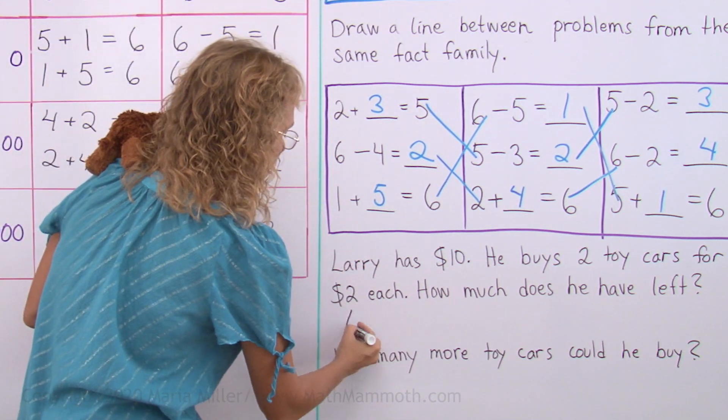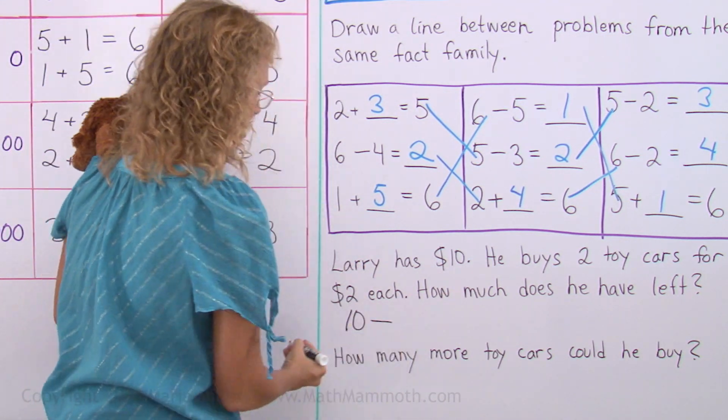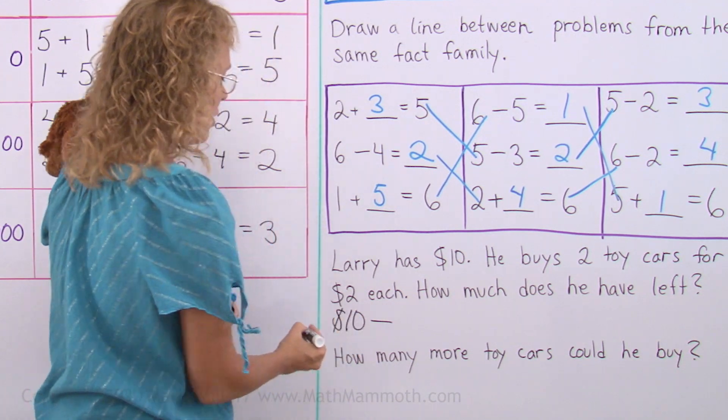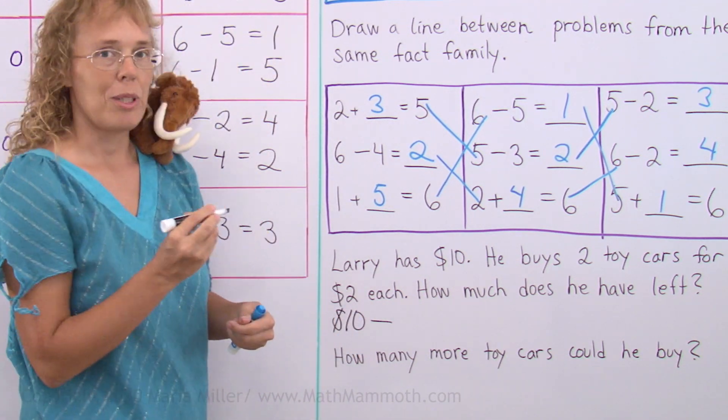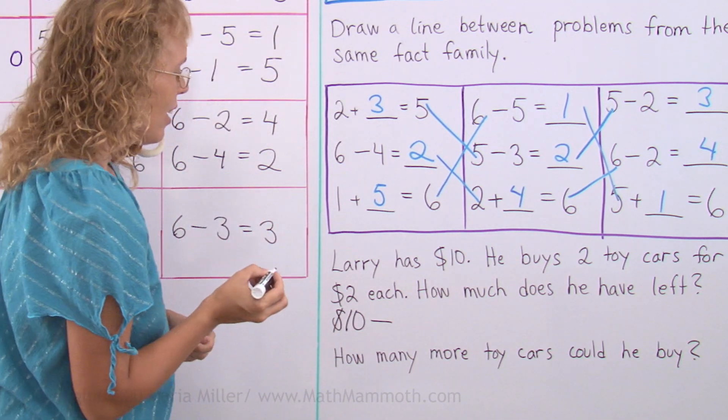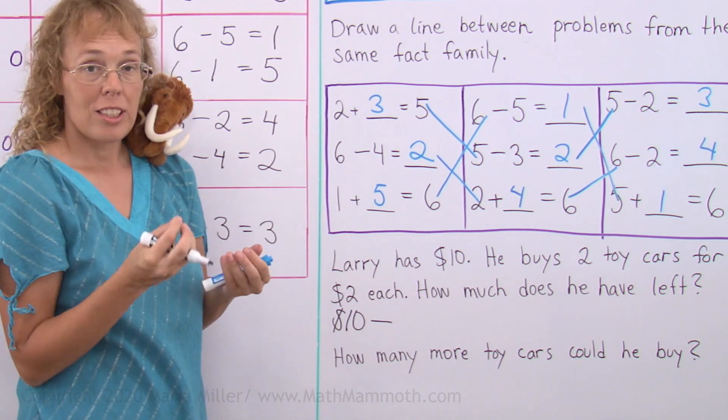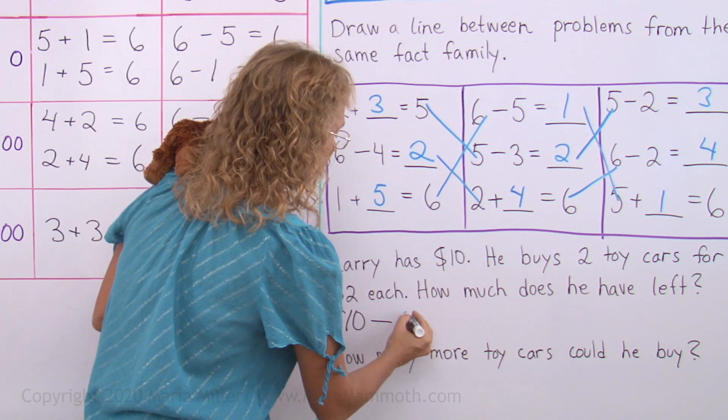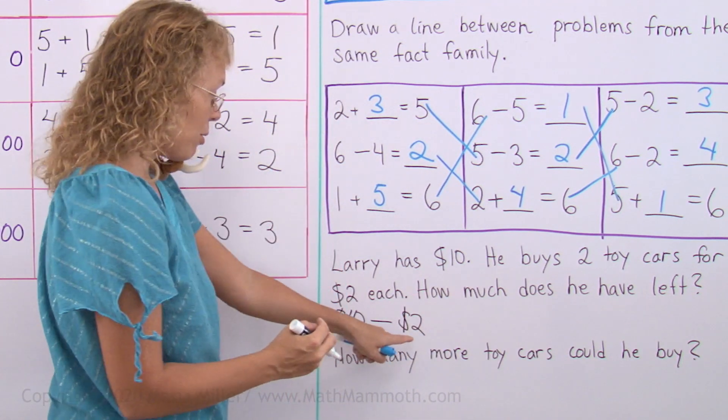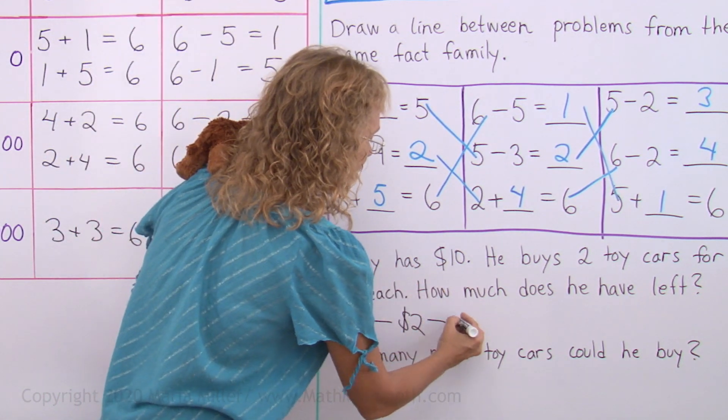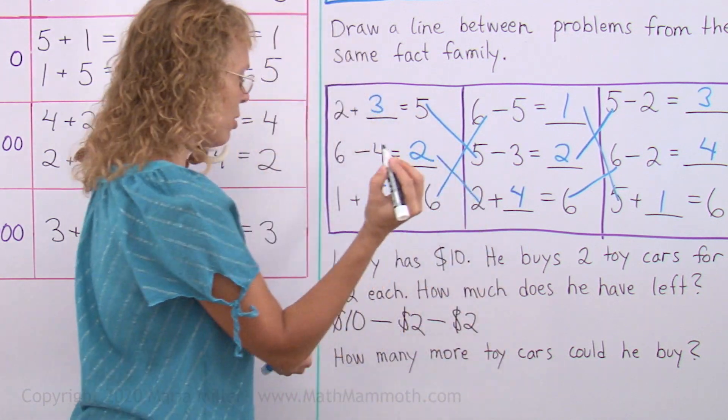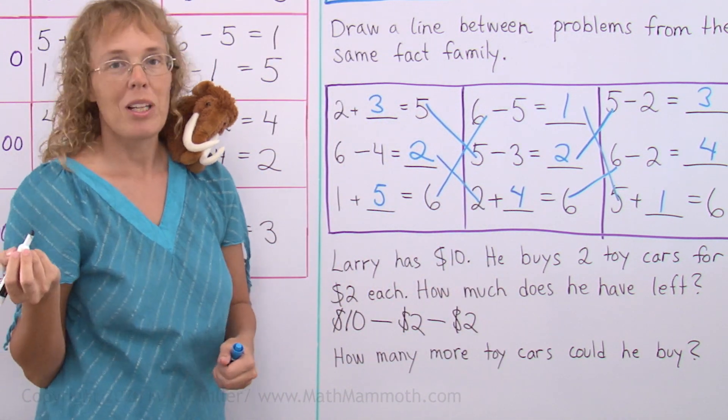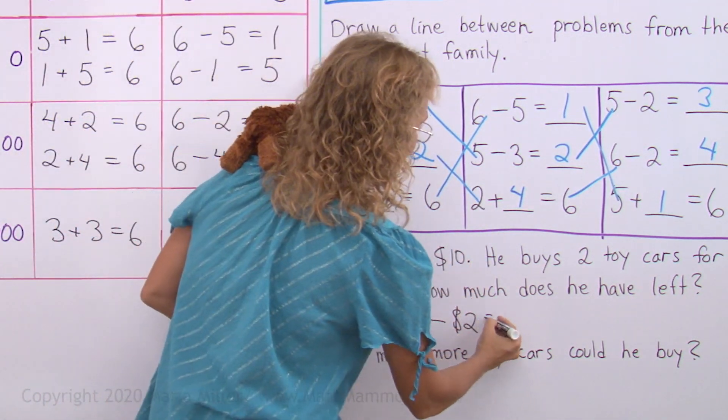We would subtract $10 and then minus—let's put the dollars on here—$10 minus how much? You could write $4, $10 minus four. Or you could write $10 minus $2, that's for the one car, and then he pays for the other car too, another $2. And so how much will he have left? $6.